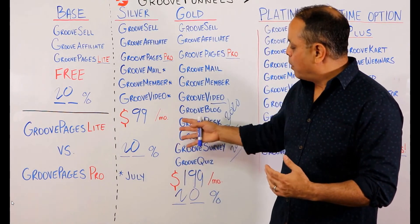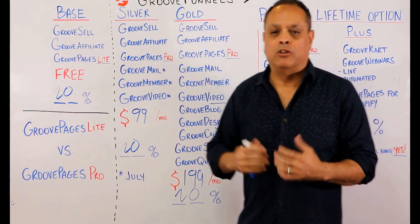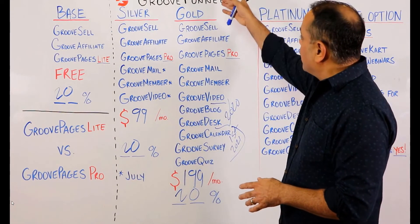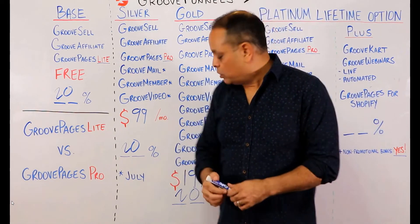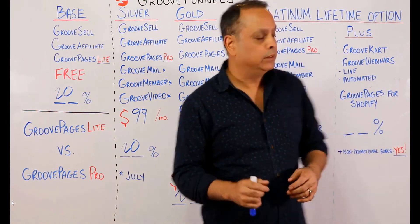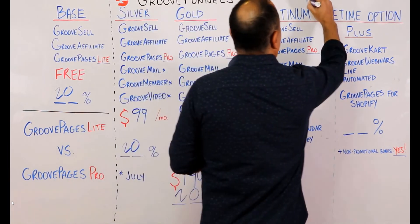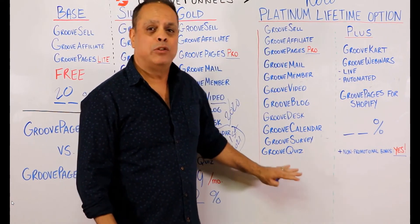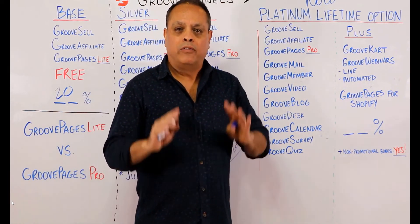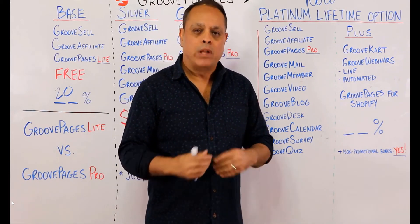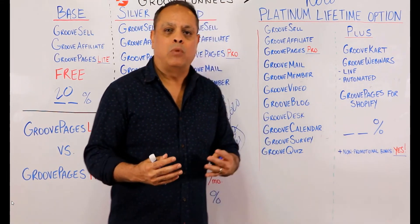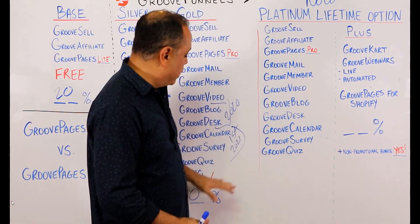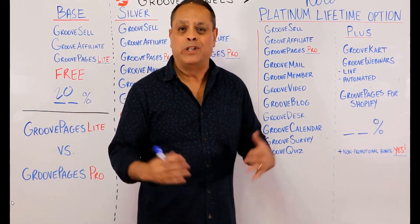That wraps up GrooveFunnels Gold, which is going to sell for $199 a month. Now let's move on to what is available right now — the GrooveFunnels platinum lifetime option. This will later sell for $299 per month, but you can get this for one price and never have to make ongoing payments again. We've raised over $2 million with people like you getting this. Later you can pay $299 a month or about $3,600 per year, but right now you can get it for less than half of that.